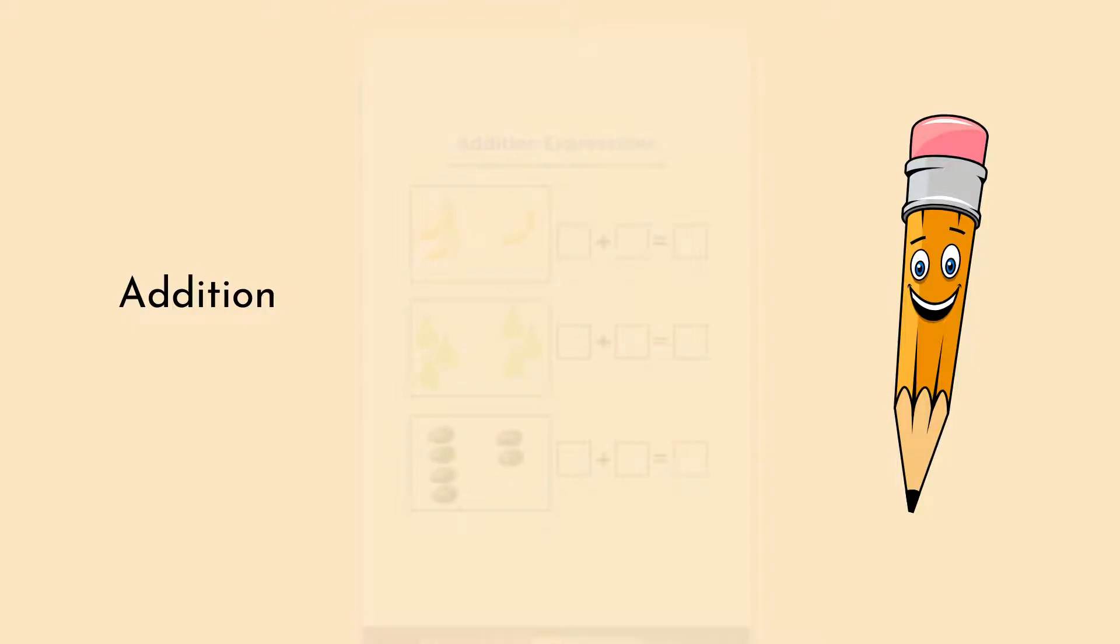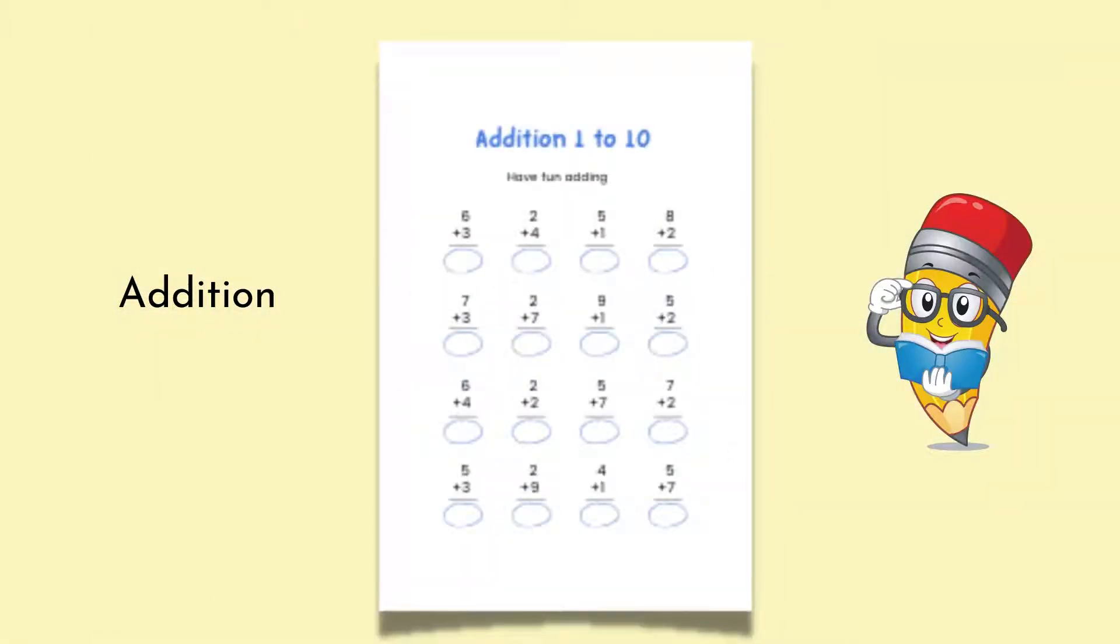There are also worksheets that have no pictures but they contain basic numbers, small numbers. So we are adding numbers in this case from 1 to 10, and these worksheets, again as I mentioned, are highly illustrated.